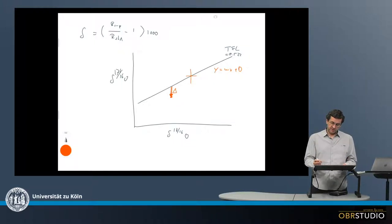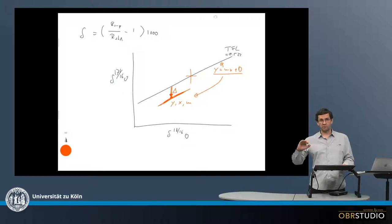As the equation for this line is this one here, we know a number of parameters for this point. We know its y value, we know its x value. This is also on a fractionation line, maybe parallel to this TFL. If we make this assumption, we also know the slope, which is of course the same as for the TFL.